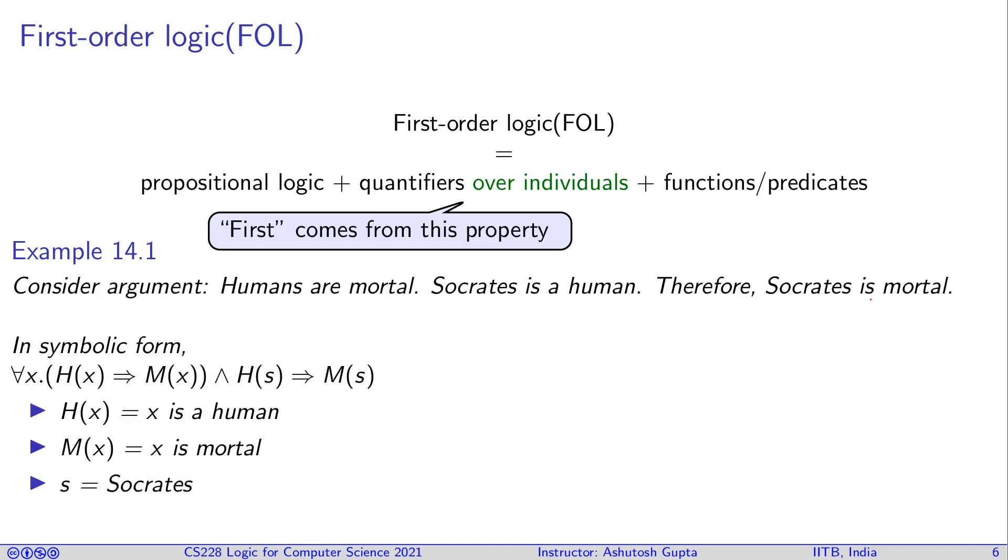You can write this statement in the following form, and this is a first-order logic formula. You need predicates which say that x has this property h, so that is a parameterized predicate. You have individuals and quantifiers over individuals, so this is a first-order logic formula.